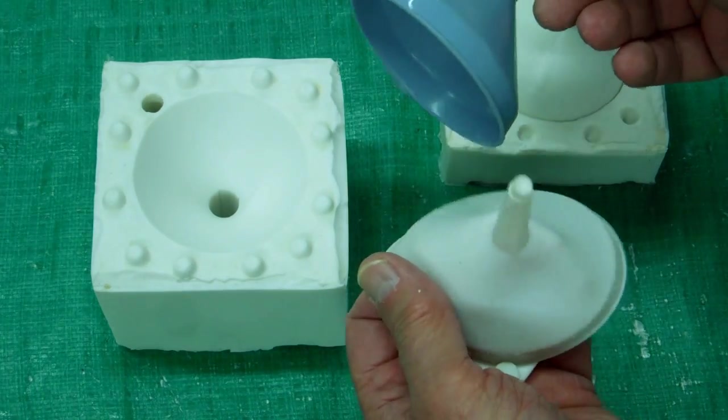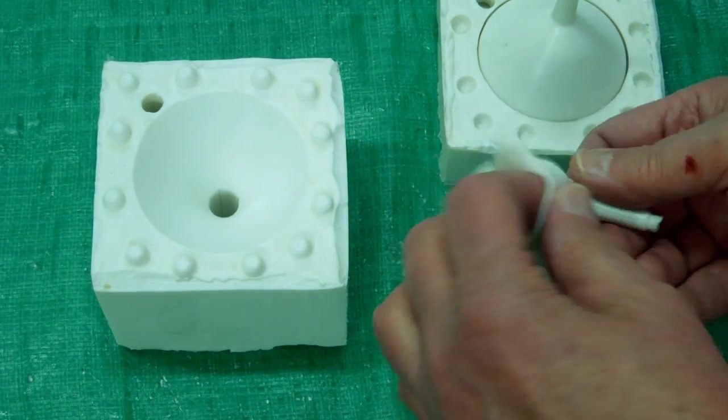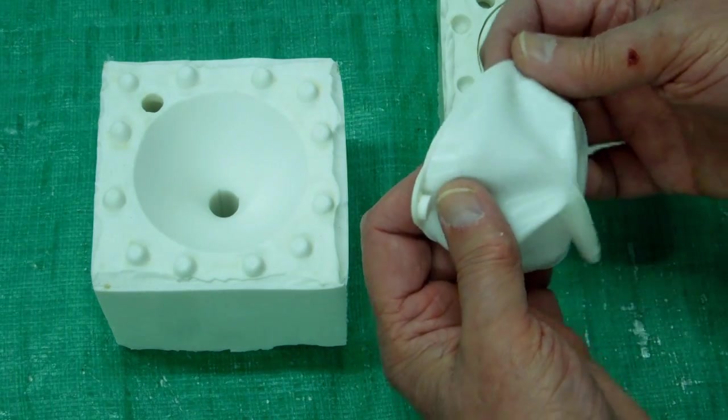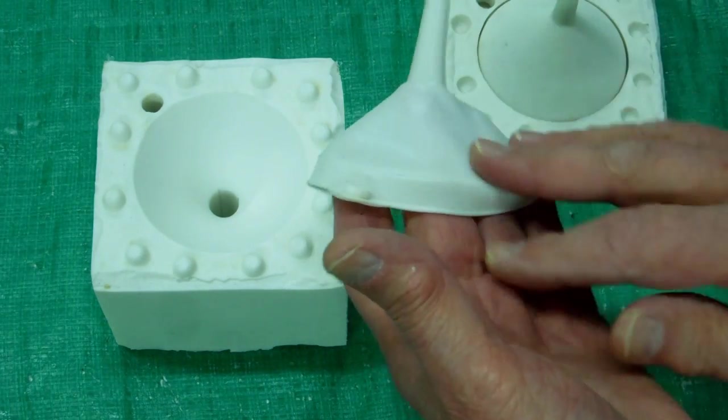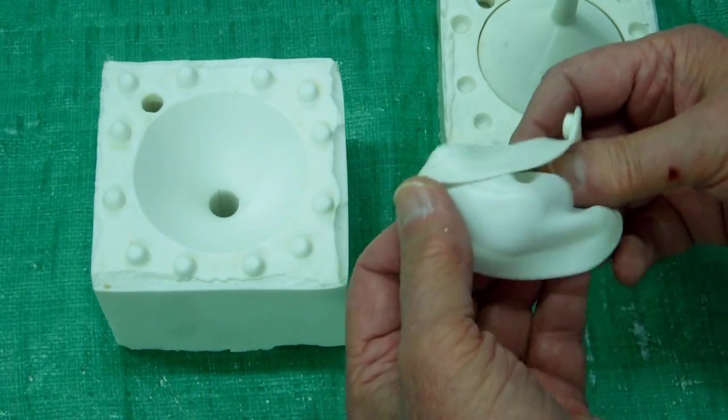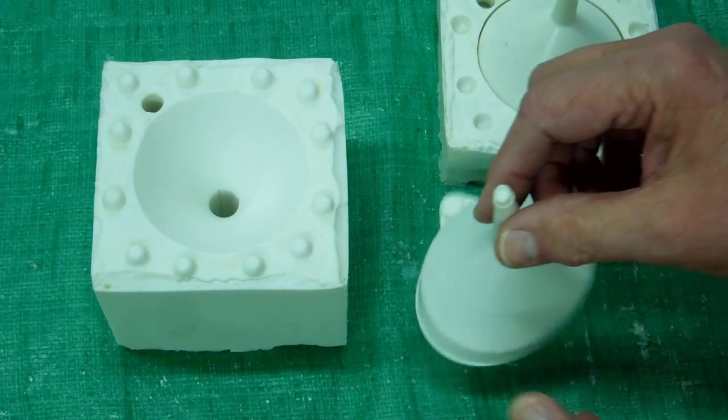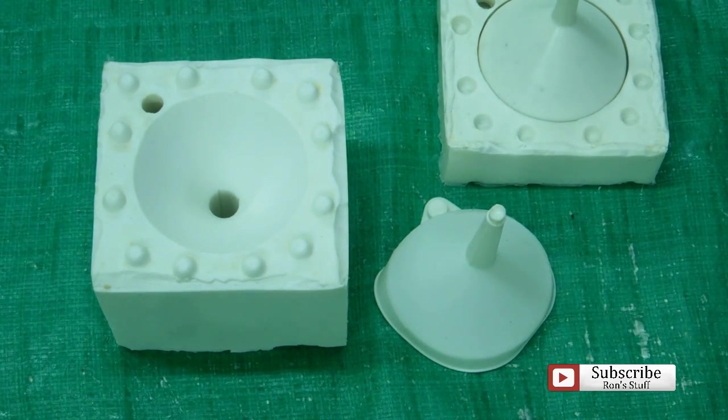To make a mold of a thin, detailed item like this in a thin section, and to end up with a perfect casting with zero surface defects, zero bubbles, then that as a casting is an absolute success.